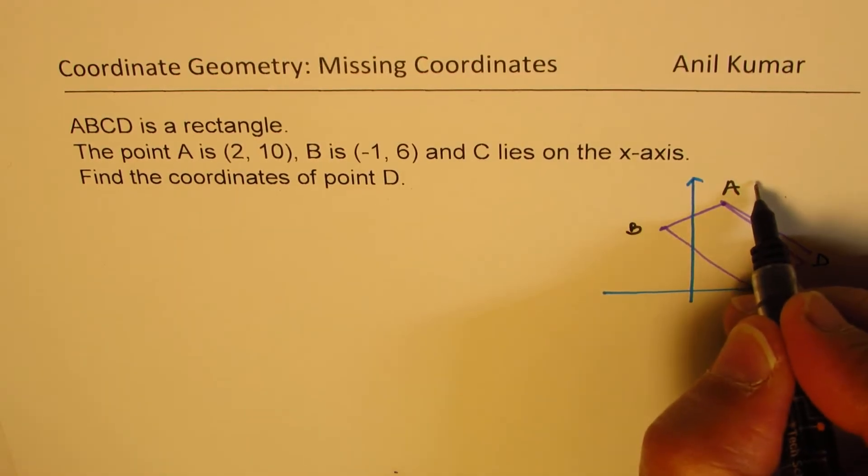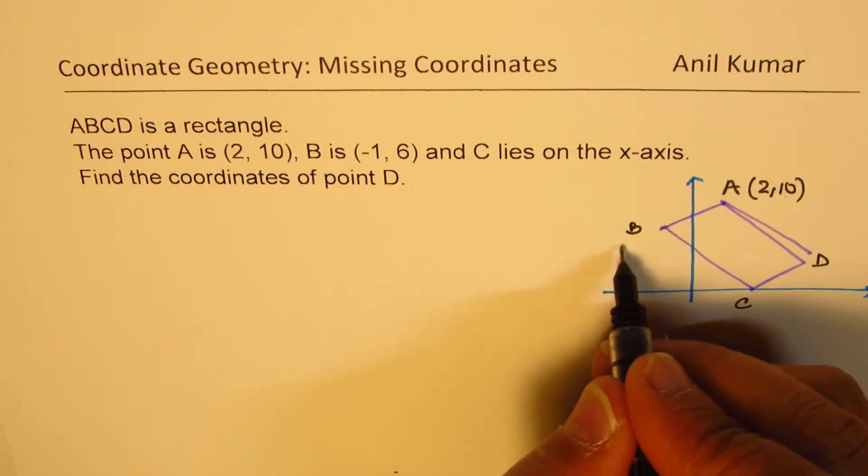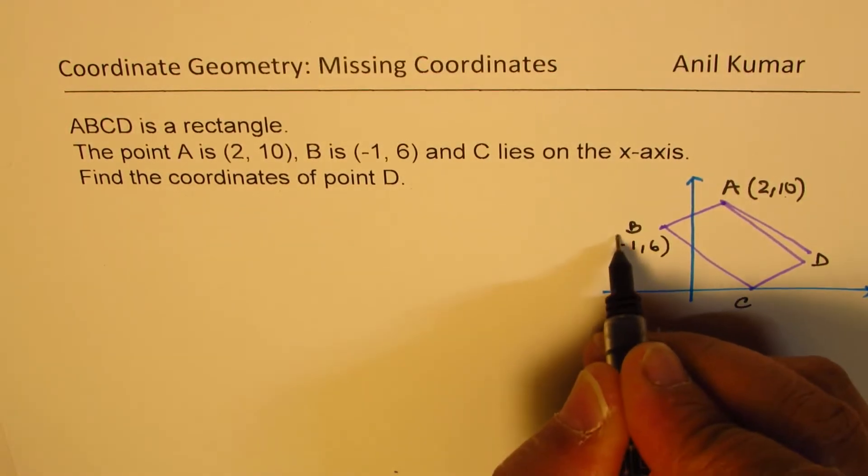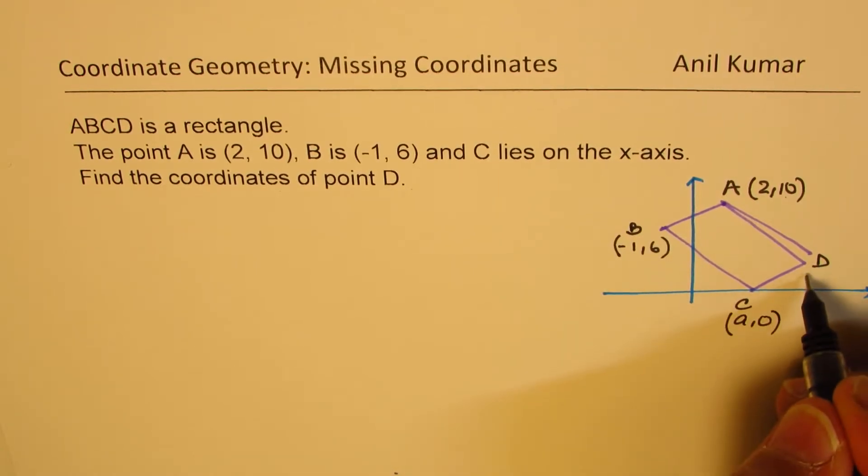A is (2, 10). B is (-1, 6). C is on the x-axis, so we could write this coordinate as, let us say, x value is A and y value will be 0. As far as D is concerned, we'll use point x and y.